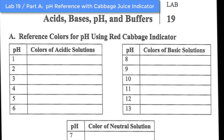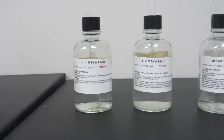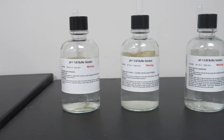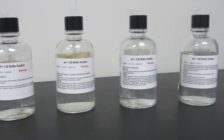In part A of lab 19, we're going to use red cabbage juice as an indicator for pH. Red cabbage juice, when placed in solutions at different pHs, will turn different colors, and that's what you'll see in this lab. What you want to do is record the color of the solution as you watch the video. You can pause the video and then write down your answers.